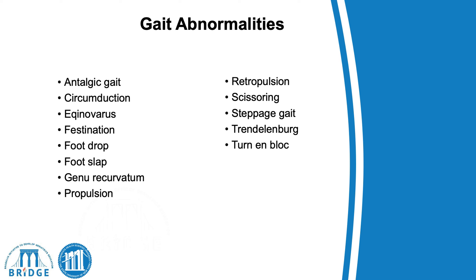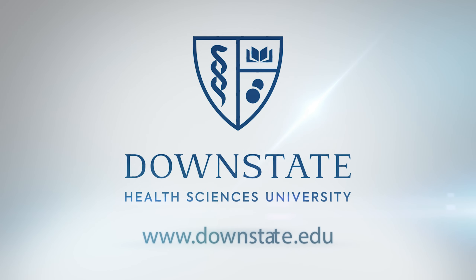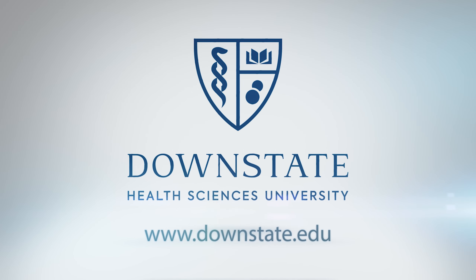Some examples of abnormal gait include antalgic gait, circumduction, equinovirus, festination, foot drop, foot slap, genu recurvatum, propulsion, retropulsion, scissoring, steppage, Trendelenburg, and turning block.